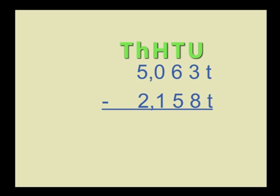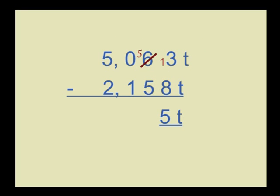We have the biggest number in the first row and calculate from right to left starting with the units. But oh dear, we cannot subtract 8 from 3. Yes, you know it, we just borrow one of the tens. The tens are now only 5, but our units are 13. Remember that we took 10 units.